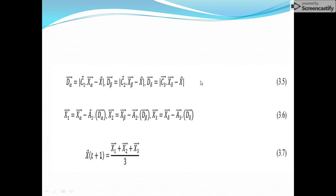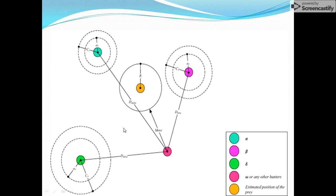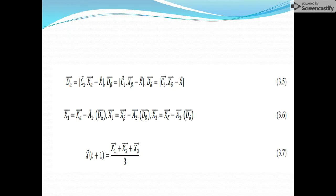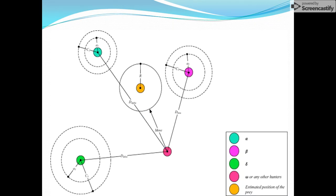We calculate D_alpha by multiplying C with X_alpha (the position of alpha) and subtracting the current wolf position. The same formula is applied for D_beta and D_delta. For all search agents we calculate fitness values across X1, X2, X3, X4, X5, and determine which are alpha, beta, and delta. Then we take the arithmetic mean (centroid) of those three best solutions, and all other agents update their positions according to this center value.